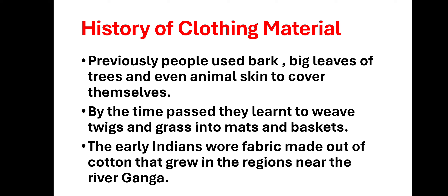Now history of clothing material — previously people used bark, big leaves of trees, and even animal skin to cover themselves। जब fabric बनाना नहीं आता था, लोग बड़े-बड़े leaves, animal skin, या पेड़ की छाल (bark) को use करते थे। As time passed, they learned to weave twigs and grass into mats and baskets। The early Indians wore fabric made out of cotton that grew in regions near the river Ganga।